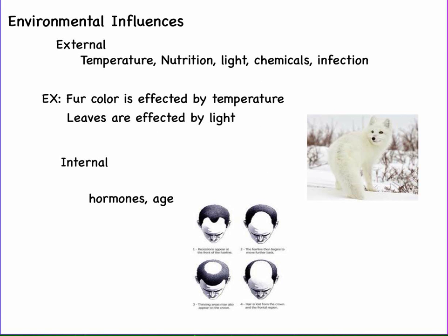Environmental influences can also affect your traits. The external environment — temperature, nutrition, light, chemicals, and infection — can change how your traits are expressed. For example, fur color is affected by temperature: Siamese cats, if you place an ice pack on their lighter colored fur, it would actually turn dark. Leaf size and color is also affected by light. Internal influences include hormones and age, and we see this with male pattern baldness, voice changes, and hair growth during the teenage years and other hormone-induced changes.